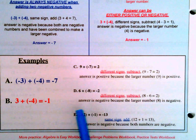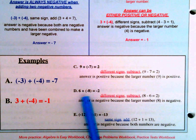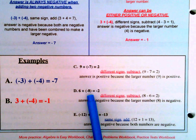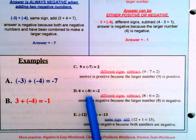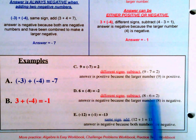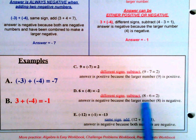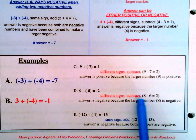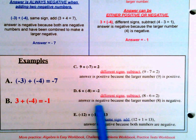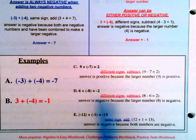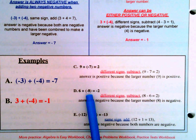Example D: 6 plus negative 8. Different signs, so we subtract — always the larger minus the smaller. 8 minus 6 is 2. The answer is negative because the larger number, 8, is negative. So the answer is negative 2.